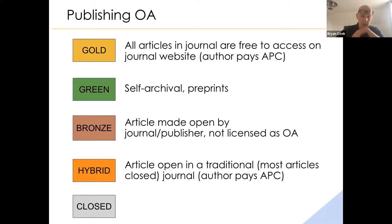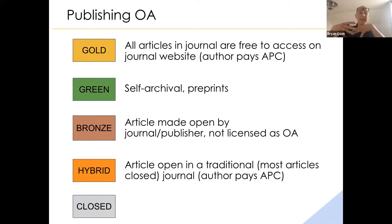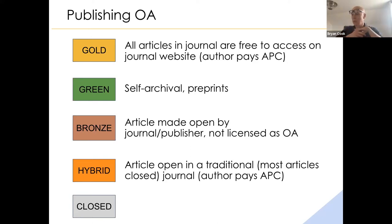The diamond or platinum open access — not on the slide — is when journals do not charge authors. Publications are open access but there's no APC. These tend to be small-scale journals run maybe by a professional organization with volunteers running a website, posting PDFs with a volunteer set of reviewers and editorial board members. They do exist, though they tend not to be large, high-profile journals.